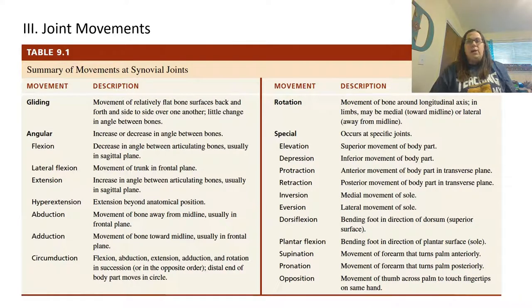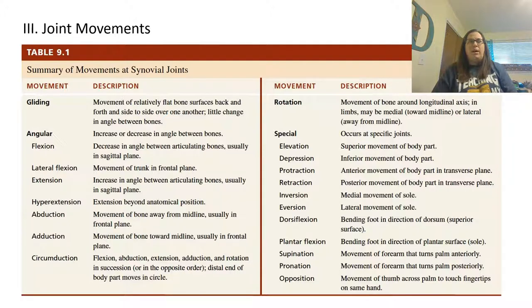Alright, so now we're going to be looking at Chapter 9, Part 2, which is going to deal more with the movements of the joint. This table right here gives you an idea of the different types of movements that are available that your body can undergo. These include things like gliding all the way down to circumduction on one side and then rotation to opposition. We're going to talk about a majority of these as we go through these notes.